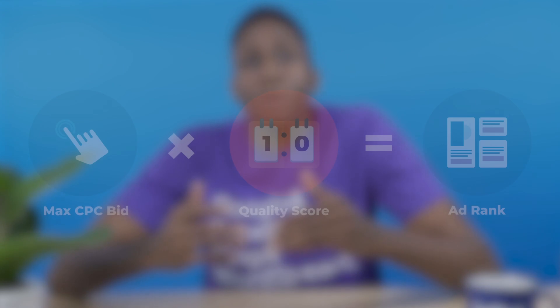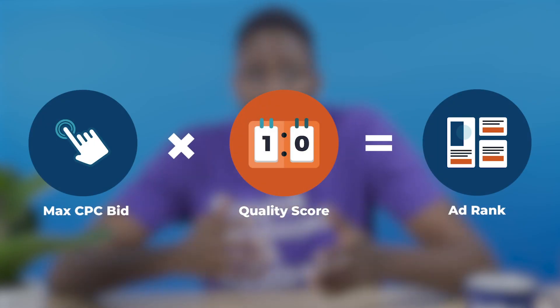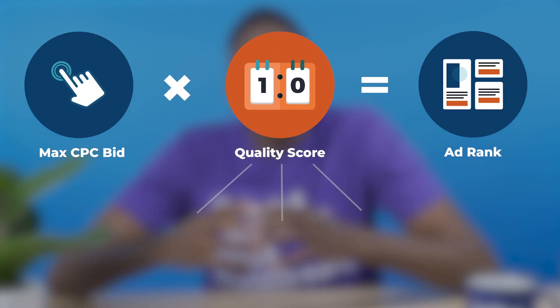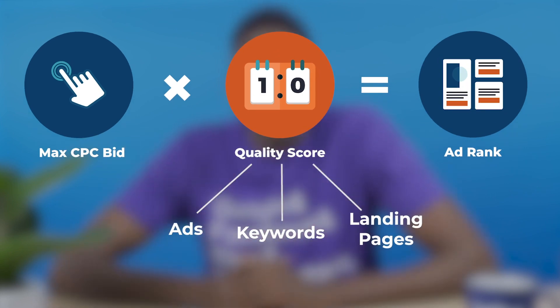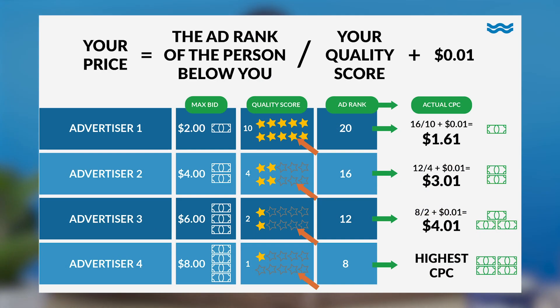Let's take a minute to review how the ad auction works. Your ad rank is determined by your max CPC bid multiplied by your quality score. Quality score is an estimate of the quality of your ads, keywords, and landing pages, reported on a 1 to 10 scale — it includes expected click-through rate, ad relevance, and landing page experience. The more relevant your ads and landing pages are to the user, the higher your ranking. Your ad rank determines your ad position and your cost per click. How much you pay is just one cent more than the ad rank of the person below you, divided by your quality score.